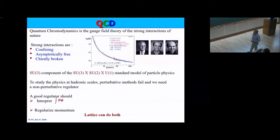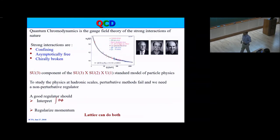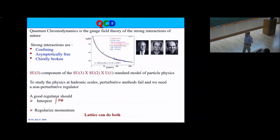The physics at hadronic scales: perturbative methods fail. Think about the proton mass — it's 1 GeV, and if you add up the quark masses, that's just 1–2%. Most of it comes from the non-perturbative interactions of gluons. So we need a different type of regulator with a good measure, a good ultraviolet cutoff, and good IR properties. Lattice can do both — I will show how it can regulate the theory and calculate QCD properties.